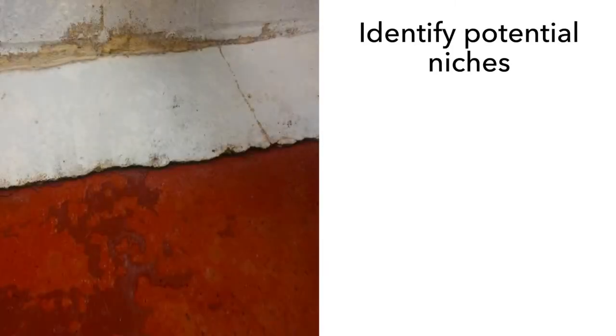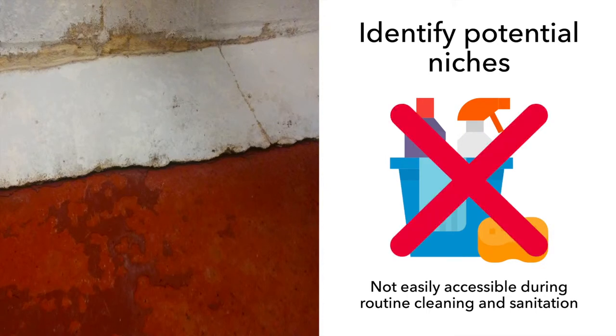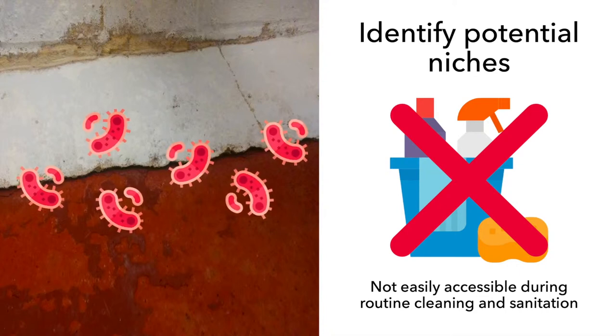Second, remember that you are looking for potential niches of pathogens. These are locations within the equipment or environment of the food facility that are not easily accessible during routine cleaning and sanitation, where bacteria can survive, become established, and multiply.